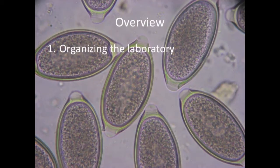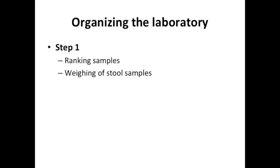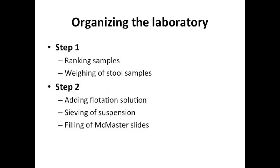1. Organizing the Laboratory. Based on the required equipment of the McMaster Egg Counting Method, it can be divided into three consecutive steps. In the first step, the samples are ranked according to a unique number, then a defined quantity of stool is weighed. In the second step, each stool sample is suspended in flotation solution.